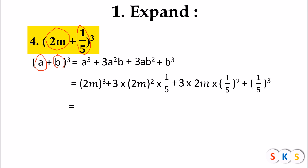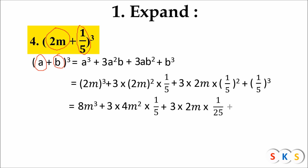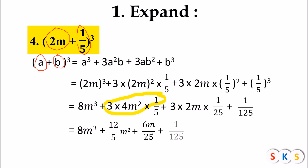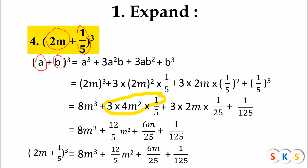Simplifying: cube of 2m = 8m³. Square of 2m = 4m², so the second term is 3 × 4m² × (1/5) = 12m²/5. For the third term, square of 1/5 is 1/25, so 3 × 2m × (1/25) = 6m/25. And cube of 1/5 is 1/125.